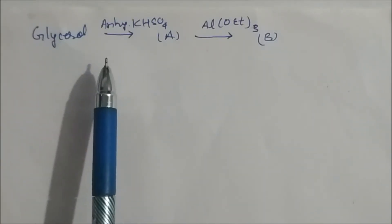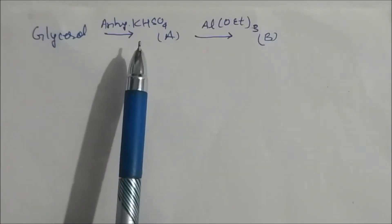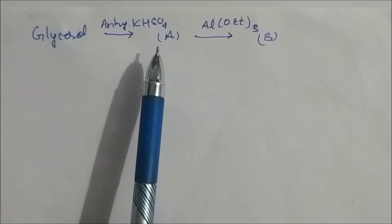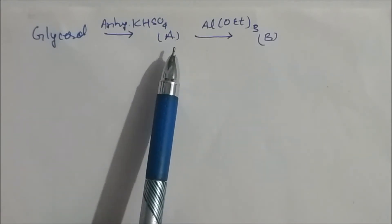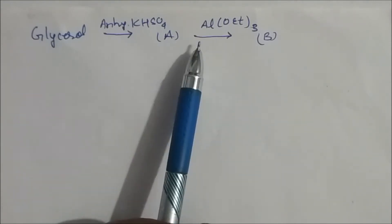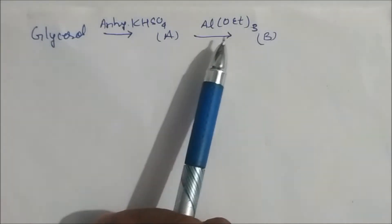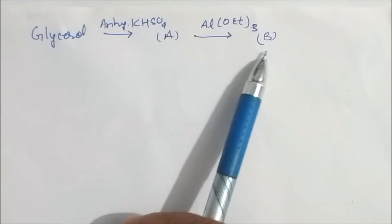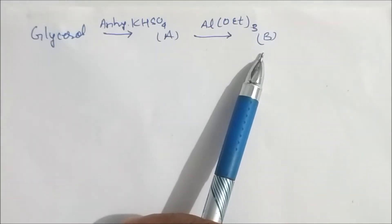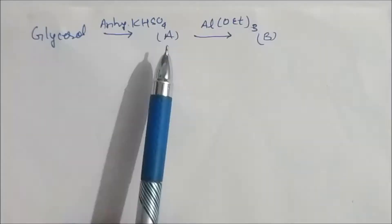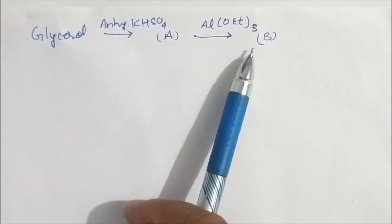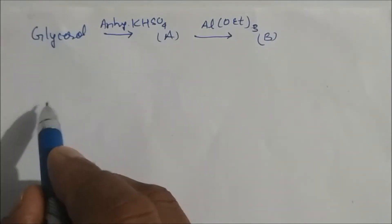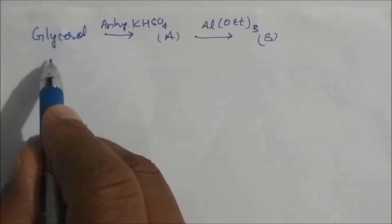Glycerol in presence of anhydrous potassium bisulfate gives product A, and A reacts with ammonium ethoxide to give product B. What are products A and B? Let us see these reactions.